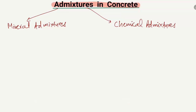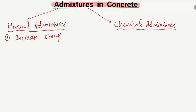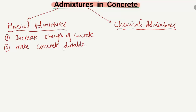Mineral admixtures have different purposes. First, they are used to increase the strength of concrete. Second, they are also used to make the concrete more durable — that is, they increase the durability and make the concrete long-lasting.